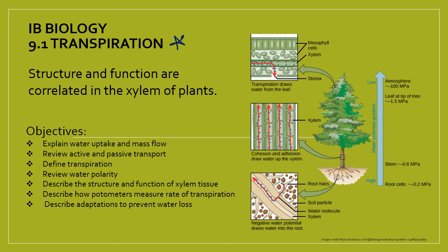Welcome to our video lecture on transpiration. Our essential understanding for today is that structure and function are correlated in xylem of plants. Xylem is the tissue through which water travels from the roots up through the stem and then out of the leaves of plants. This is basically what transpiration is all about.